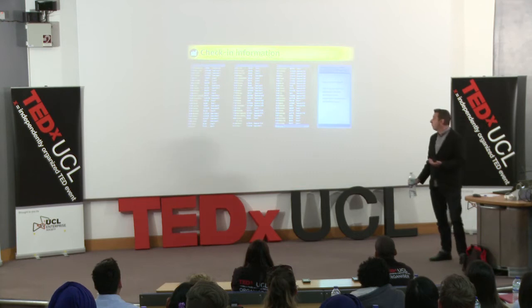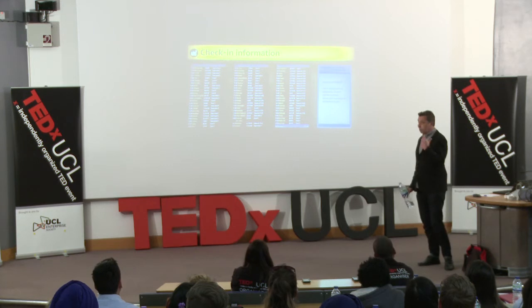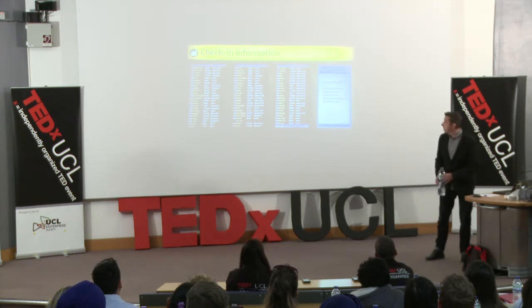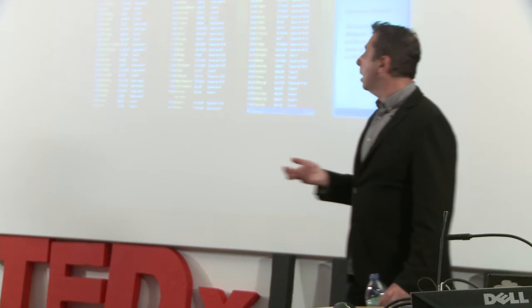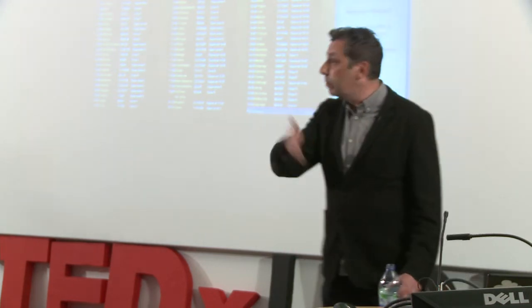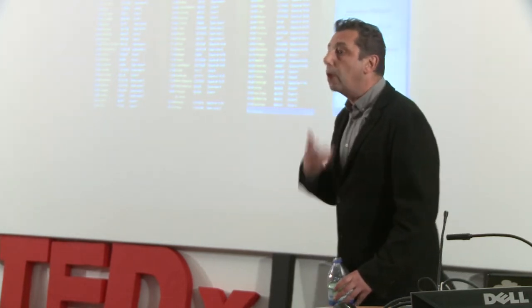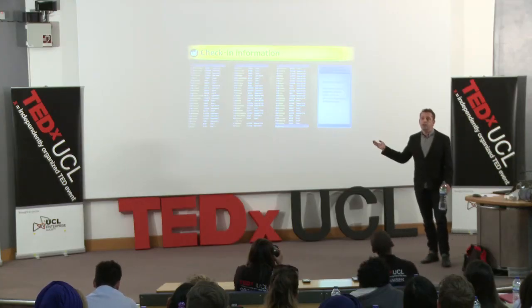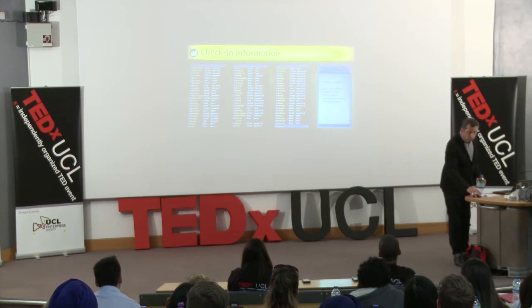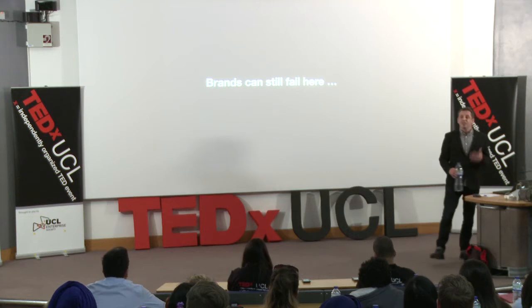One example I absolutely love is Gatwick Airport. They went independent of BAA a couple of years back and wanted to show they were all about service. All they did was put an invitation on the check-in board: 'Tweet us anything you like and we will sort it out.' They have a team of six people whose job is to run around the airport solving those problems — whether the toilets are unclean, or even border control issues where they'll go and try to sort out the queues, get more staff on. Go and look at their Twitter feed — it's full of people just getting their problems solved in a simple and imaginative way.